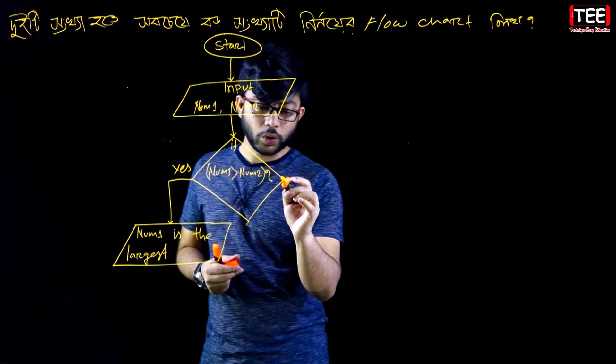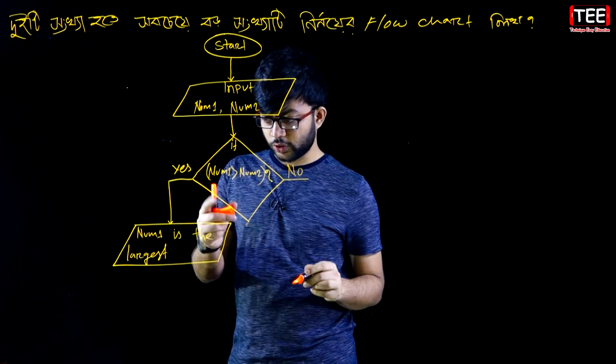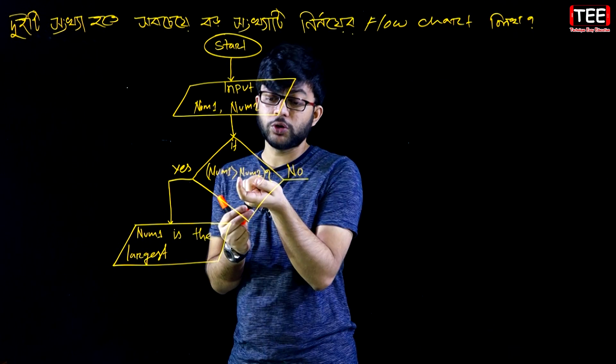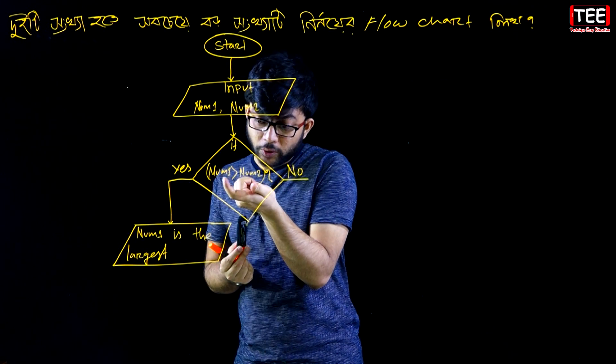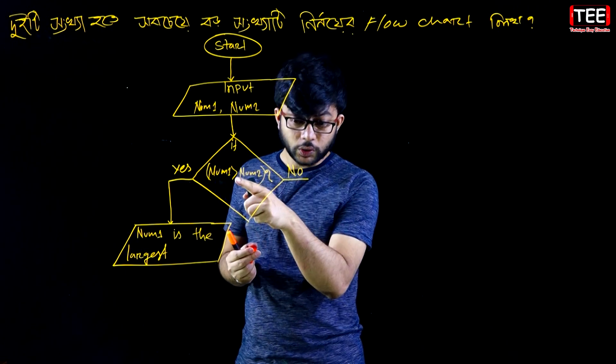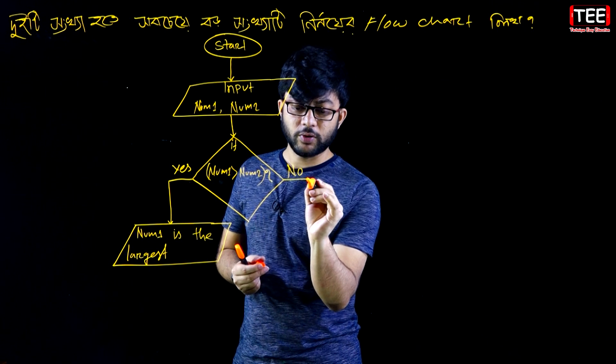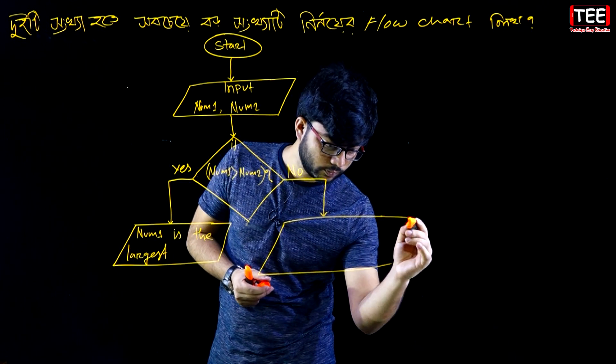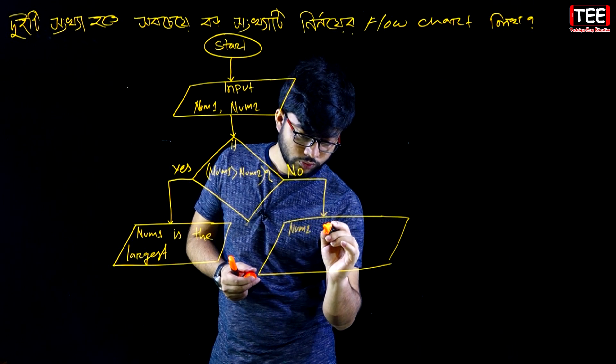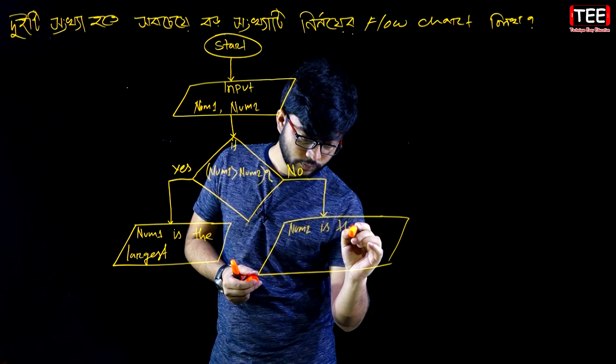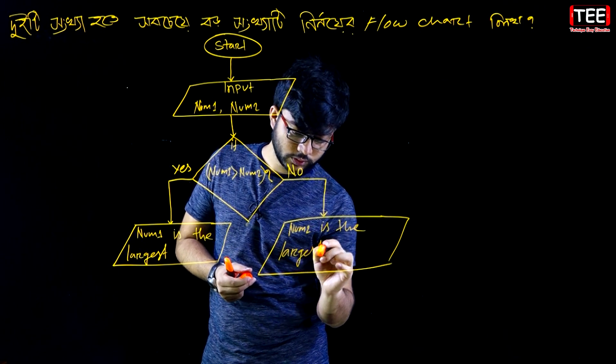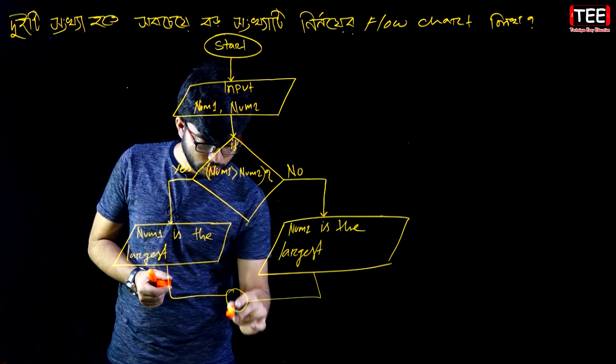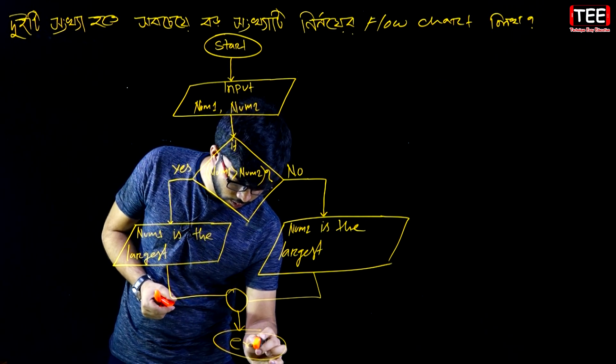If number one is not the largest, then the condition is which one? Otherwise, the other condition - if number two is greater, then number two is the largest. Then the program closes and ends.